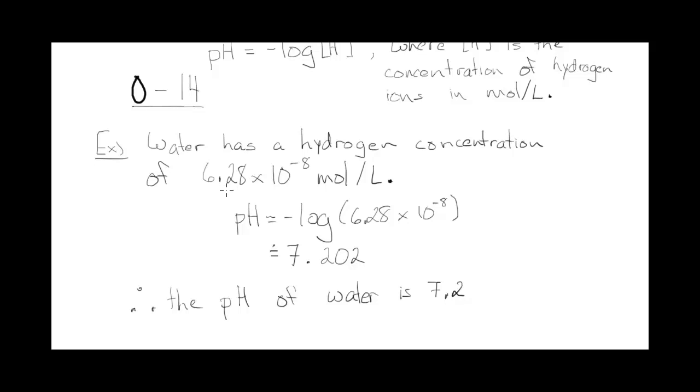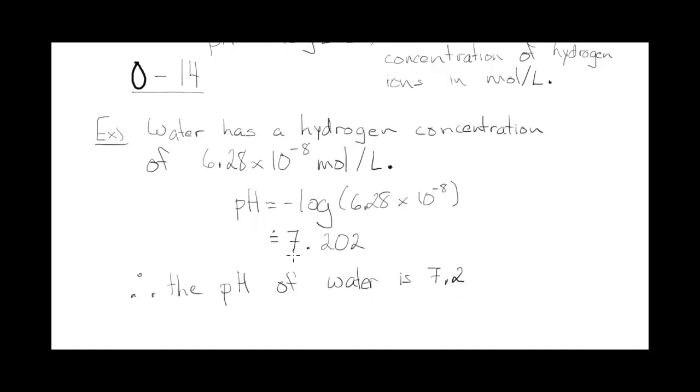What you actually do when you measure this is you put either a test strip or something into the water and it will measure the concentration of hydrogen ions in moles per liter, but then it will give you a reading based on the pH scale of a number between 0 and 14. That reading is easier to understand than a number as small as 0.000000 with however many zeros you need 6.28.